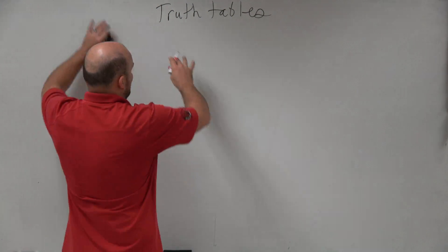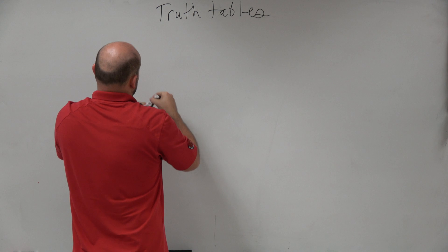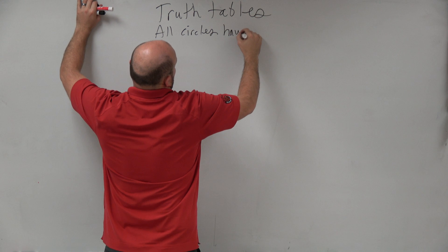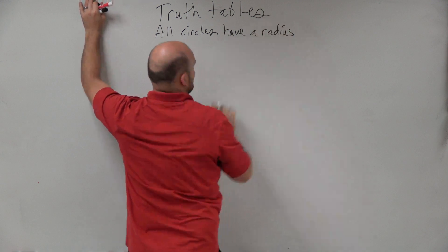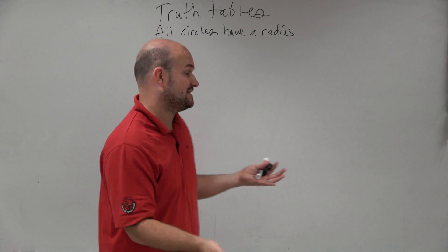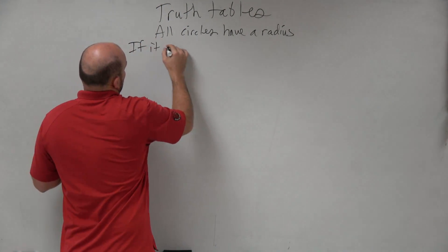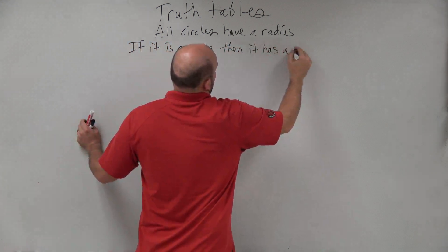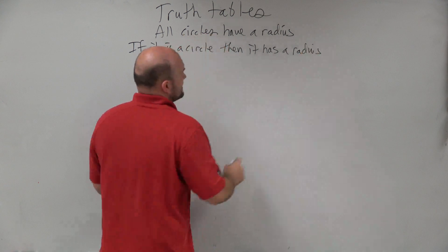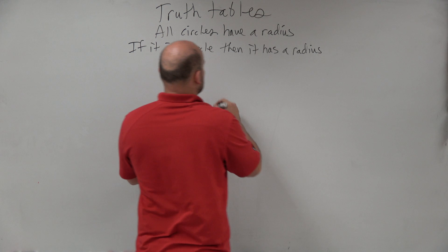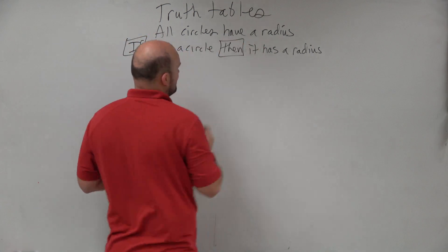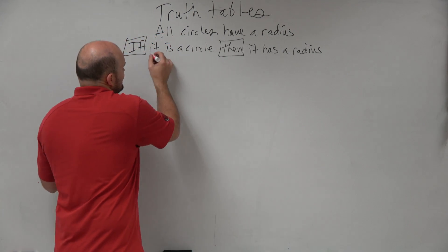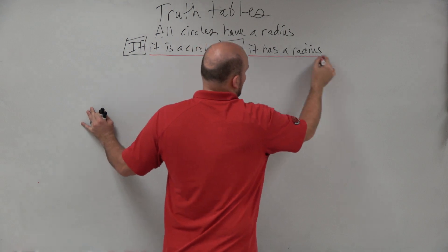We started our conditional statements with an original statement: all circles have a radius. We broke that into a conditional statement by saying, if it is a circle, then it has a radius. This is a conditional statement because of the if and the then parts. The hypothesis always follows the if, and the conclusion always follows the then.